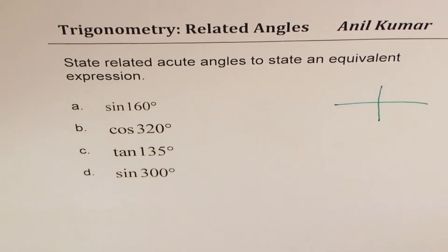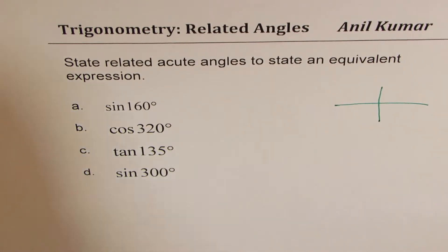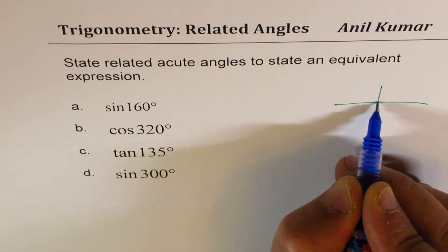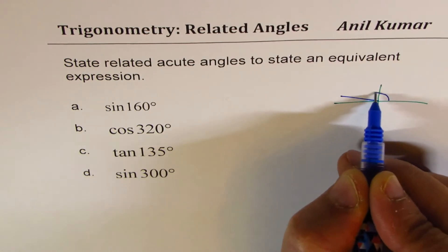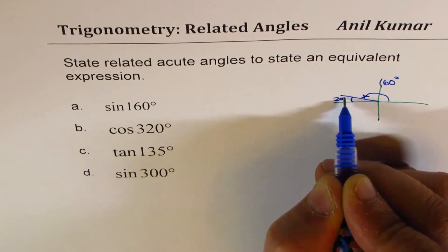Let's do the first one which is sine of 160°. Now 160° is an angle which is in quadrant 2, so let us say this position represents the angle 160 degrees. That means the acute angle is 20 degrees.